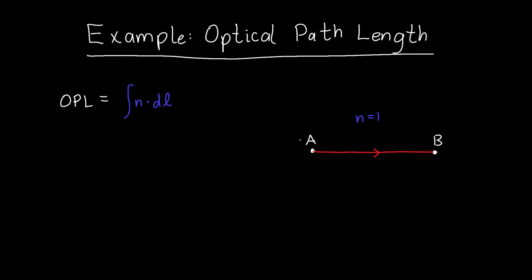In this video we're going to go over a few examples of computing optical path length. We're going to start with a nice and simple one and then move on to more complex ones. First of all, what is the definition of optical path length? In math speak, it's the integral of the refractive index times the length. If the refractive index is constant, this is just equal to the refractive index times the length that the light has traveled.